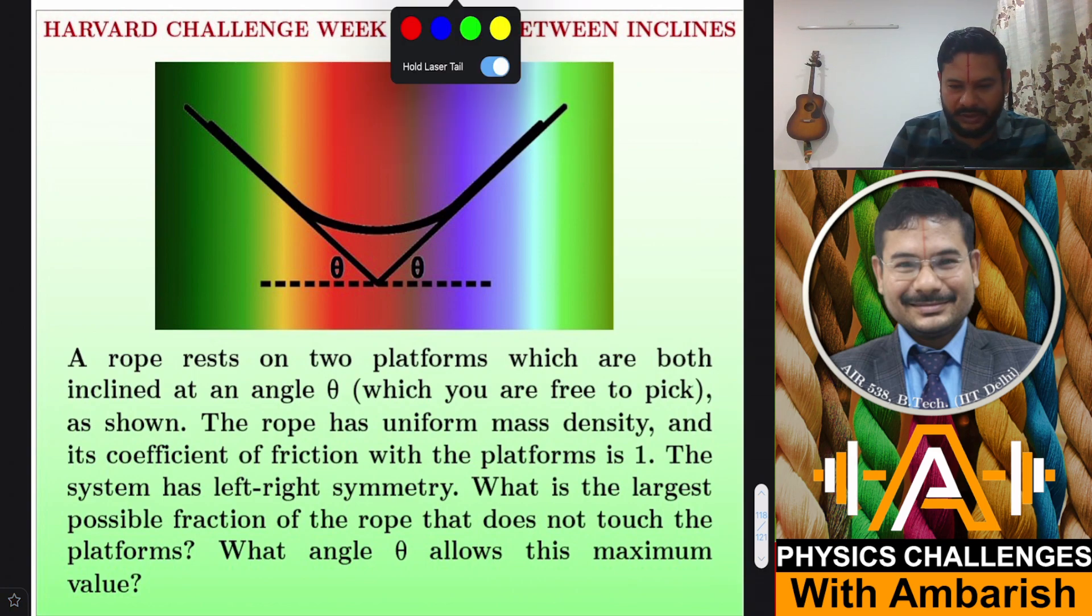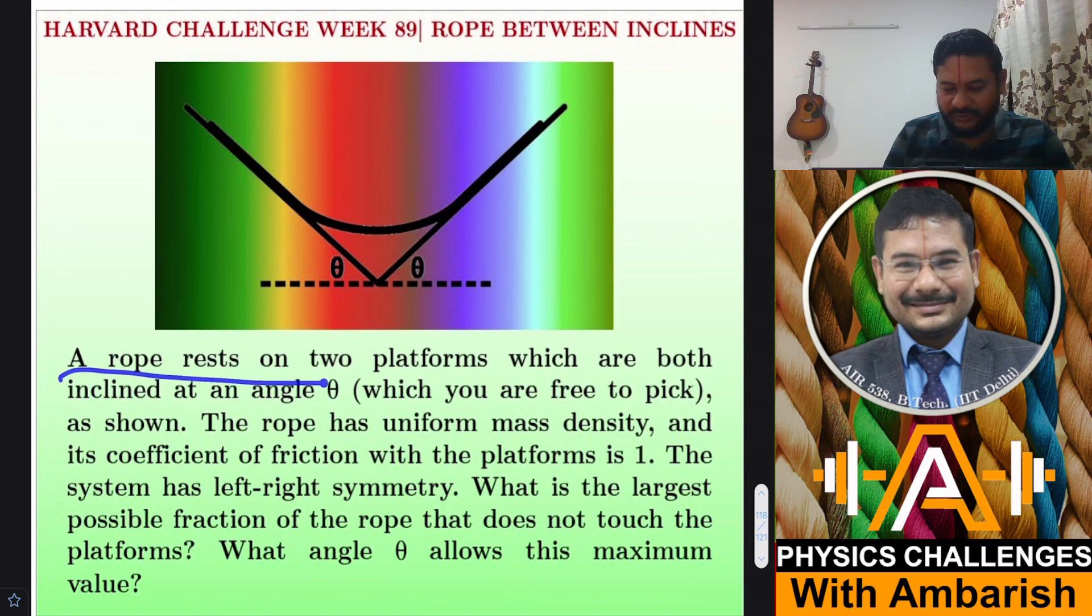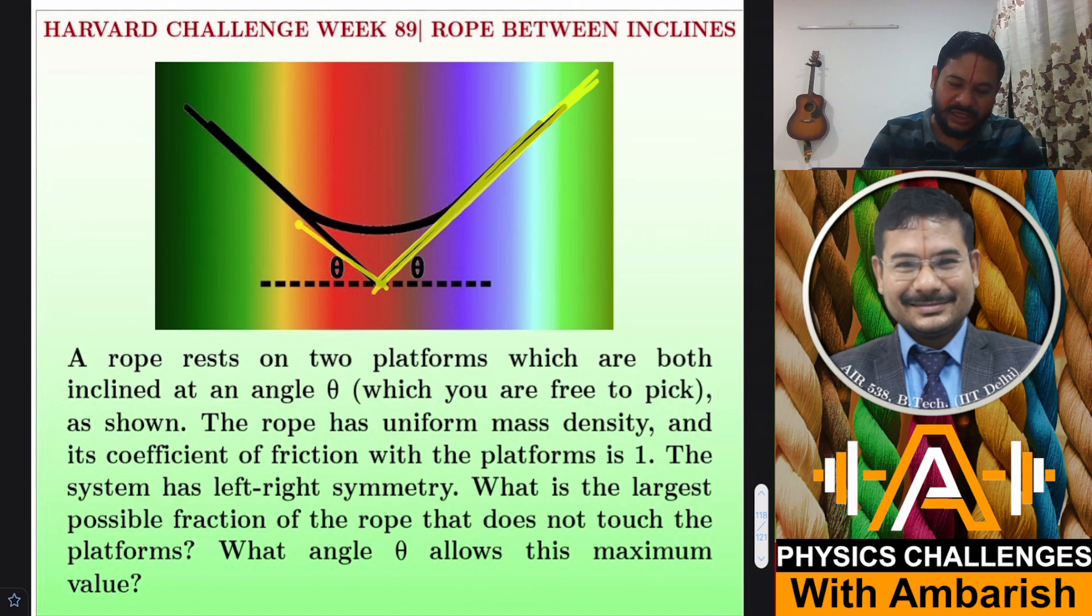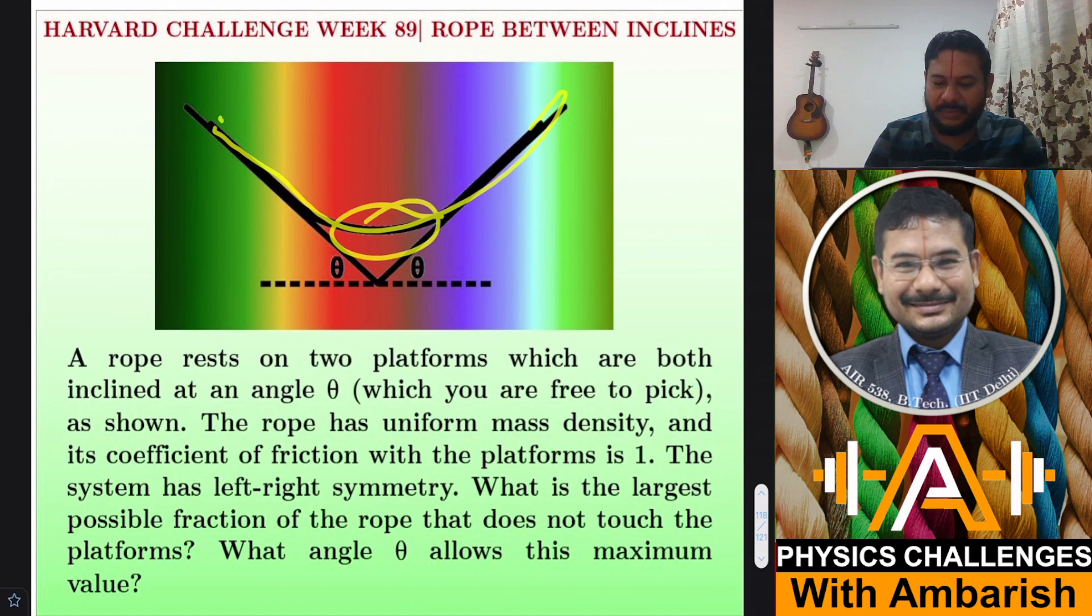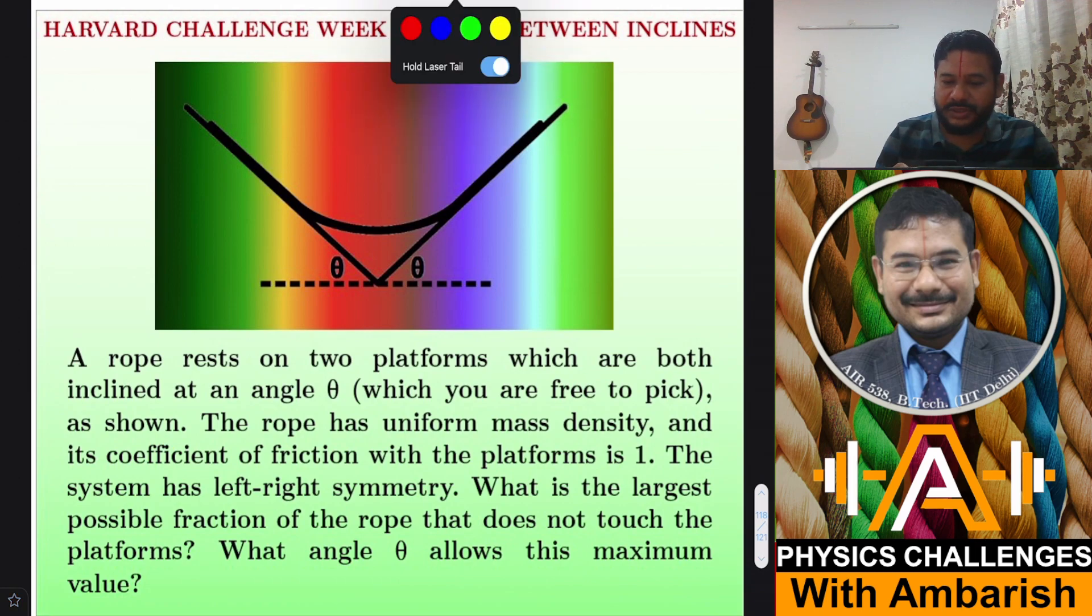A rope rests on two platforms which are both inclined at an angle theta which you are free to pick. So this is one inclined plane and this is the other inclined plane, and there's a rope resting between them. Part of the rope is hanging in there and part of the rope is lying symmetrically on the inclines.